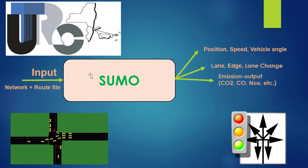We can also have the emission output like the CO2, CO, NOx, and so on. We can also have as output the time to collision, the brake rate, the bumper-to-bumper distance, the deceleration to avoid a crash, etc.